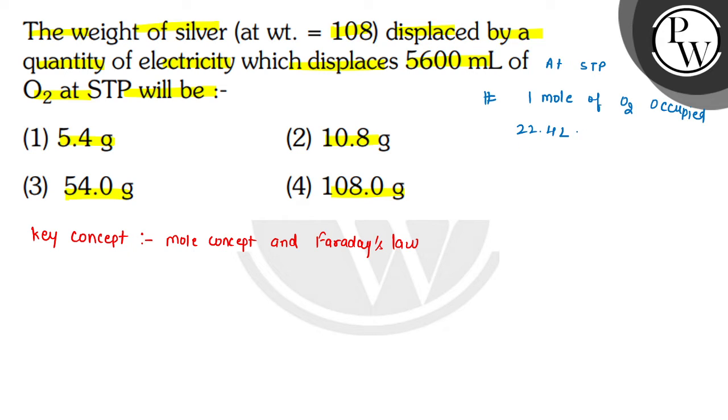So 22.4 liters can be written as 22.4 times 10 to the power 3 milliliters. Because here volume is given in milliliters, we will write it in milliliters. So we have 5600 mL.